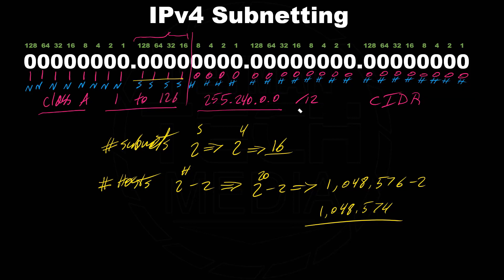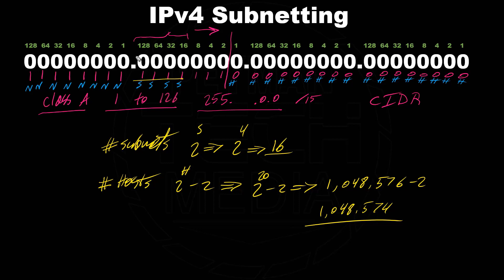Now, if we had a CIDR notation of /15, we count from left to right: 1,2,3,4,5,6,7,8,9,10,11,12,13,14,15. So the cut line moves to position 15. Moving the cut line to the right gives us more subnet bits and fewer host bits, therefore more subnets but fewer available IP addresses per subnet. Moving the cut line to the left gives more host bits and fewer subnet bits, meaning more available IP addresses but fewer subnets.